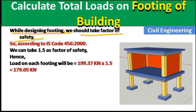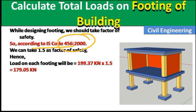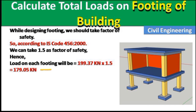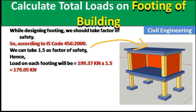When designing a footing, always apply a safety factor — not just economical factors. According to IS Code 456:2000, we take a factor of safety of 1.5. Hence, the factored load on each footing = 119.37 × 1.5 = 179.05 kN per footing. In this way we can calculate the total load on the footing due to all building components — columns, beams, slab, and walls.